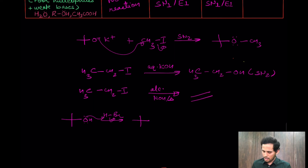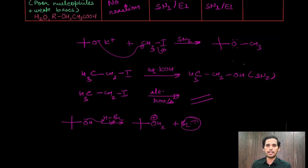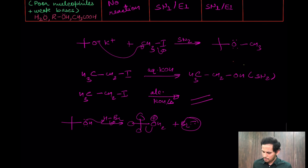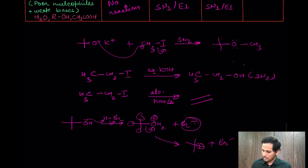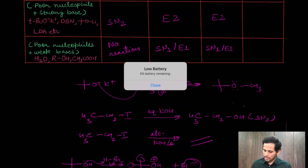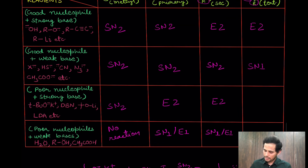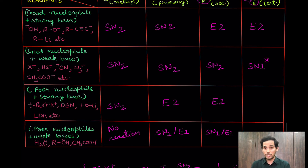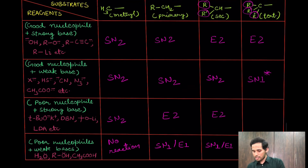For example, take a tertiary alcohol and give it HBr. First, protonation occurs giving a good leaving group. Now we have a tertiary substrate capable of both elimination and substitution, with bromide as a decent nucleophile. Bromide cannot attack directly due to the bulky groups, so heterolytic bond fission occurs forming a tertiary carbocation. Once the carbocation forms, bromide is more than willing to attack, giving tertiary butyl bromide via SN1. So the nucleophile waits for the carbocation to form, then attacks — a notable and confusing case.